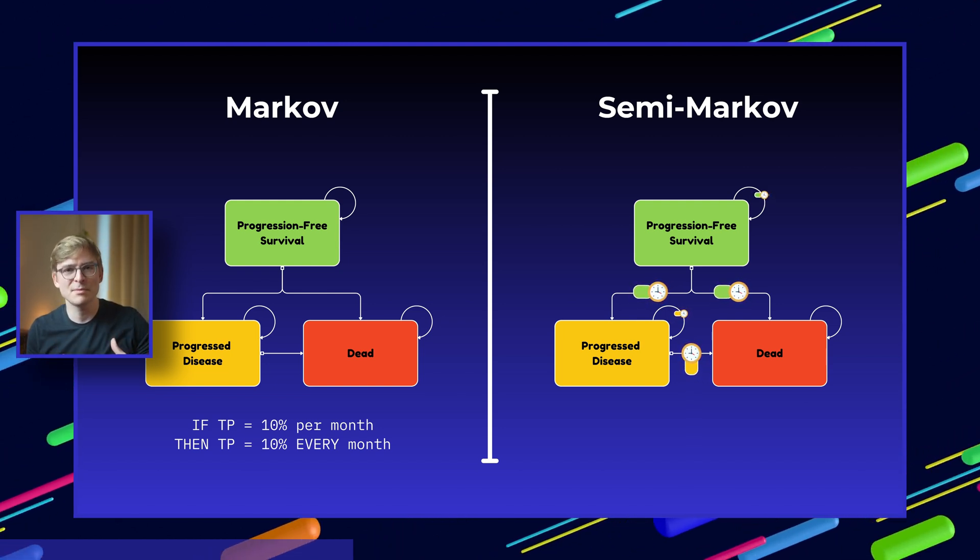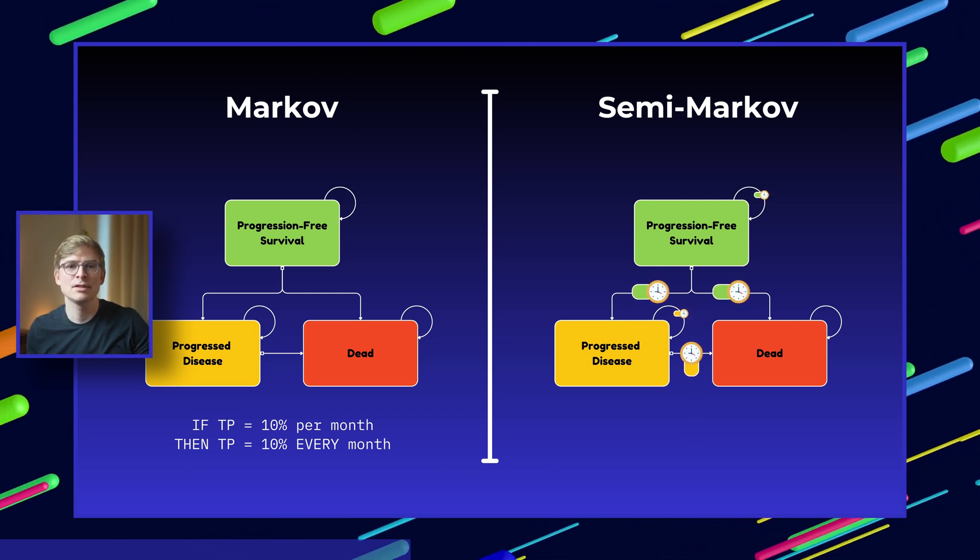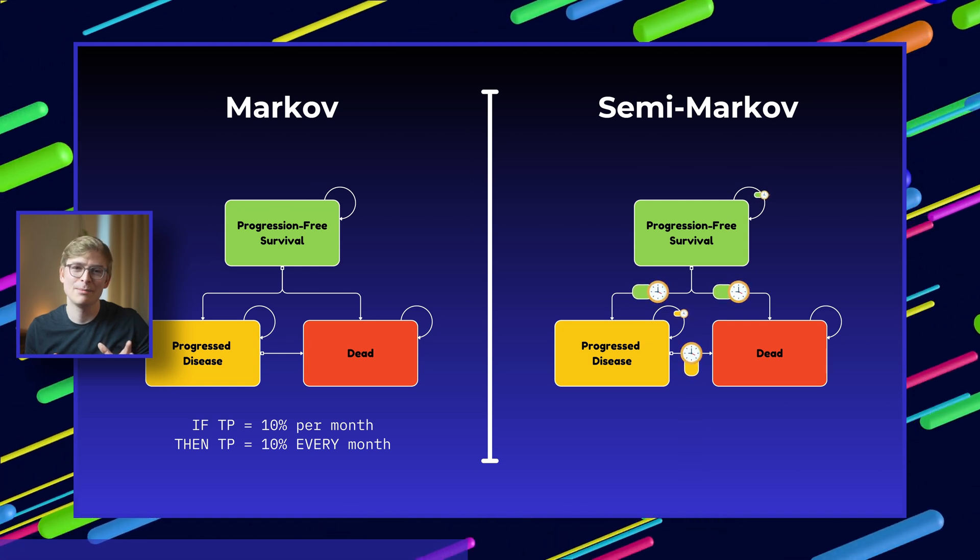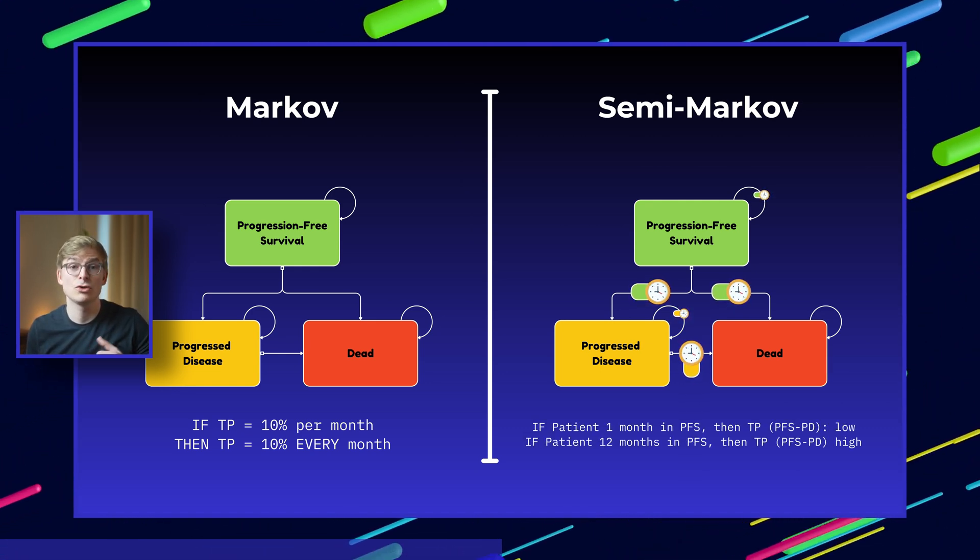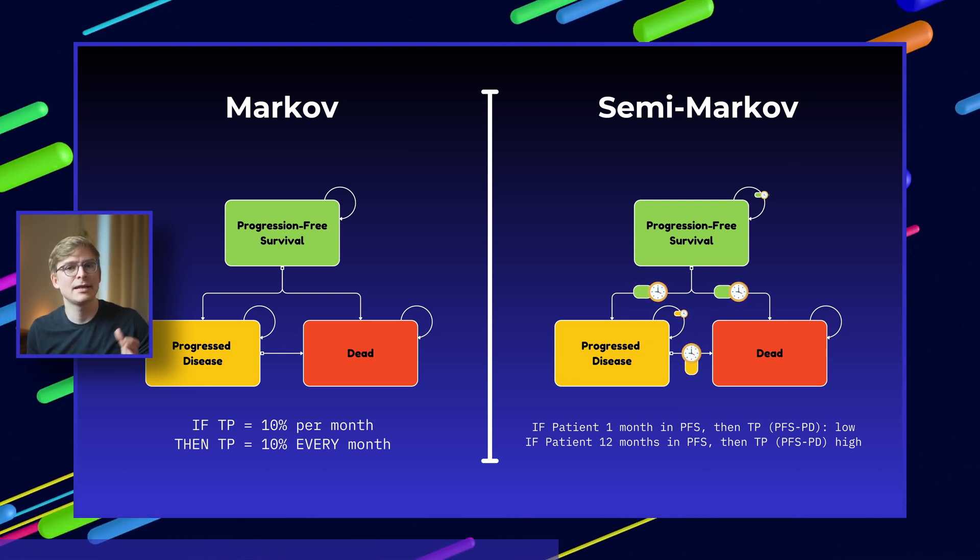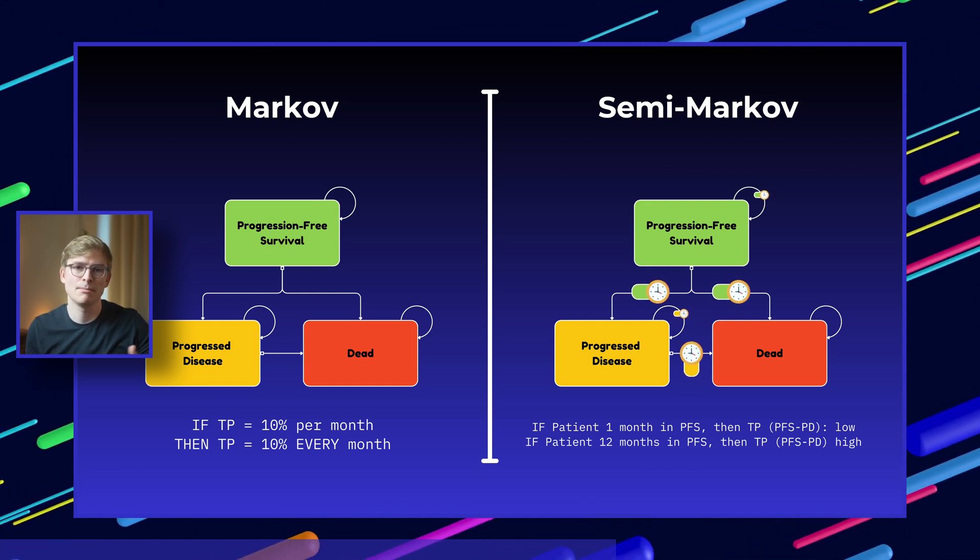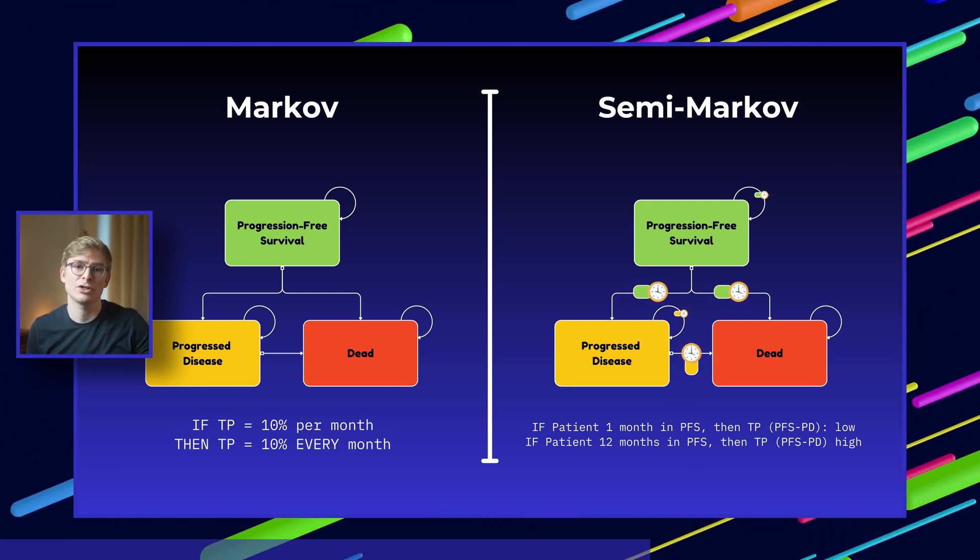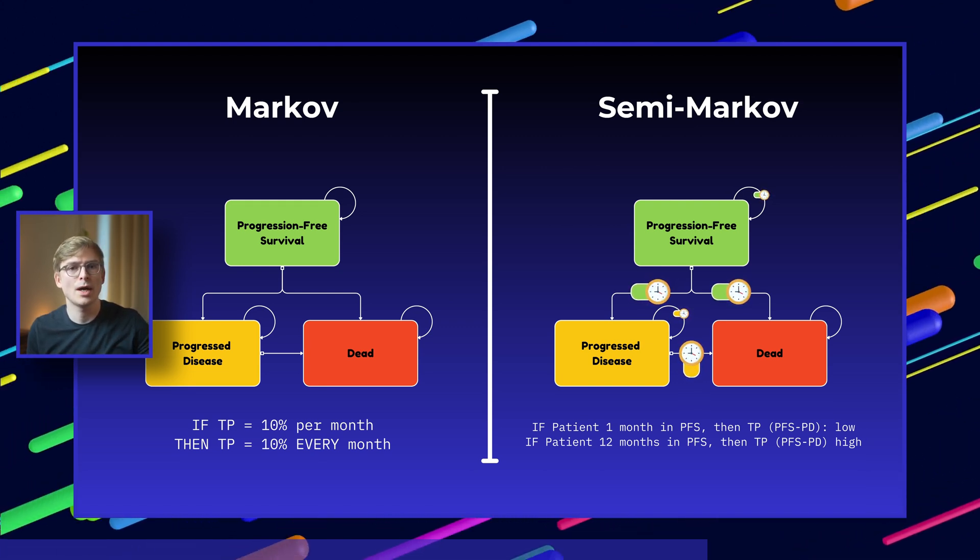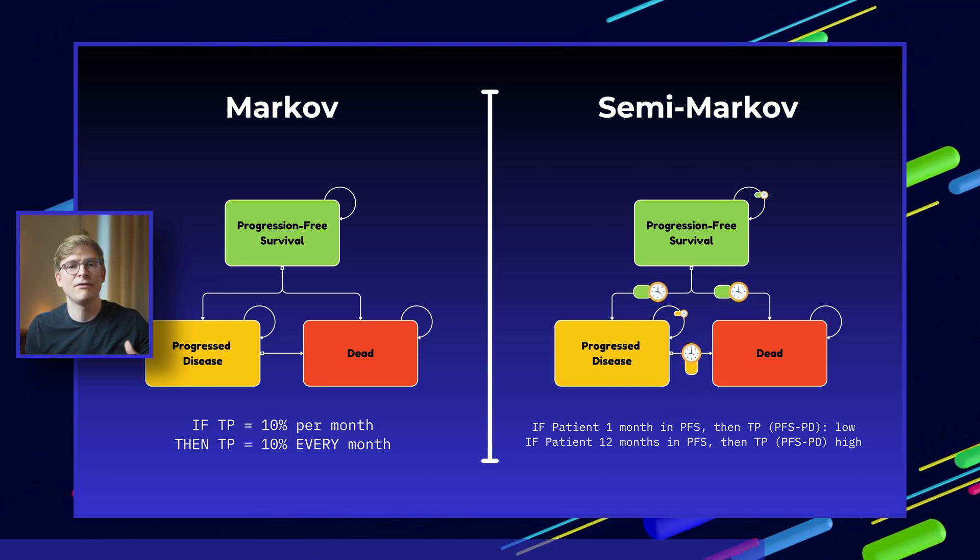In contrast, when we look at the semi-Markov model, we see that the transition probability from PFS to progressed disease is influenced by the duration the patient has spent in the PFS health state. For example, if a patient has been in the PFS health state for just one month, the probability of progressing might be low, but if instead they've been in the PFS health state for 12 months, the probability of progression might be higher because the risk of disease progression often increases over time. This reflects a more realistic clinical scenario where the longer a patient remains without disease progression, the higher the likelihood of eventually progressing.